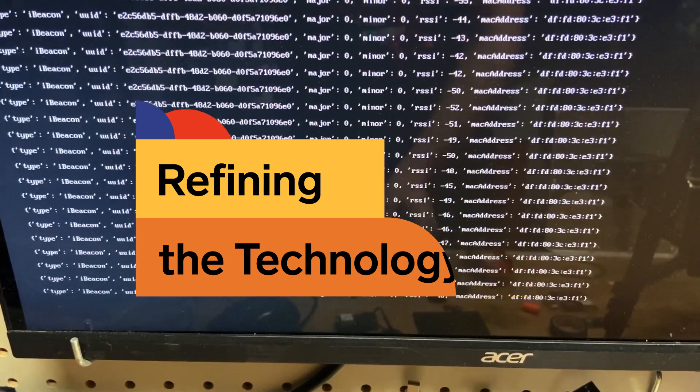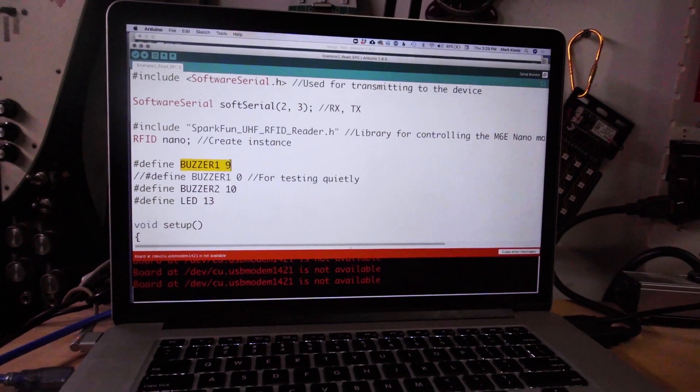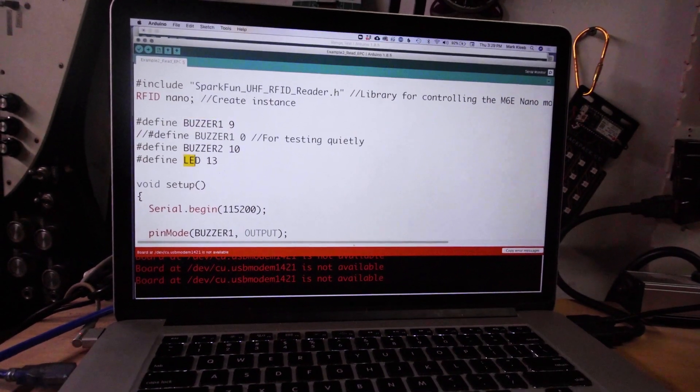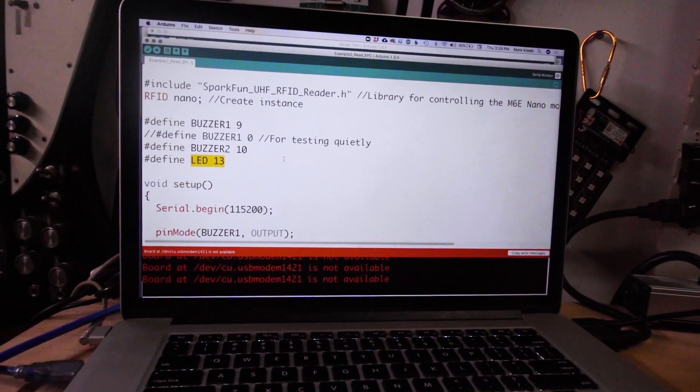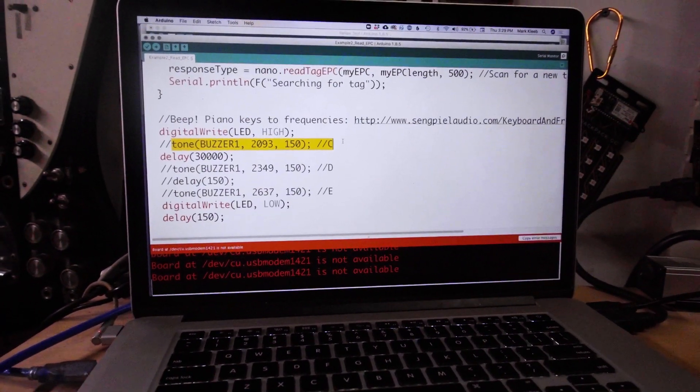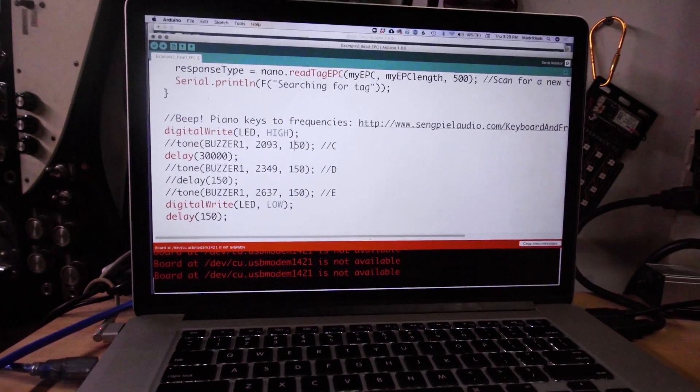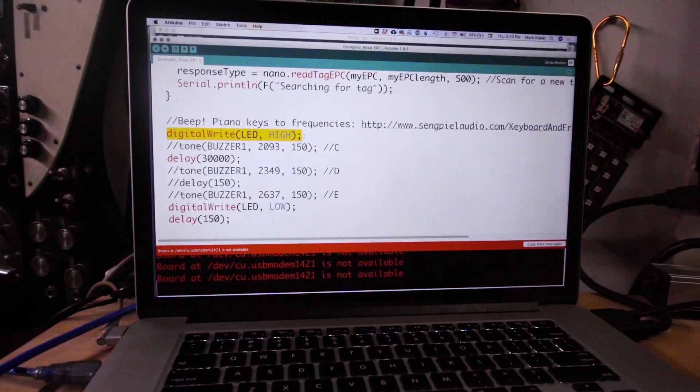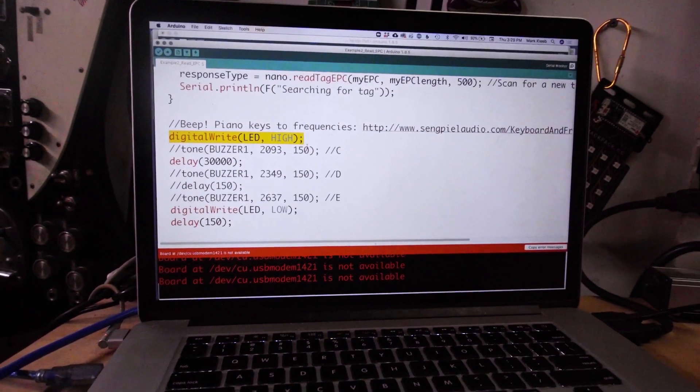So I found some code that plays a sound on a buzzer when an RFID tag is near. So what I did was I added an LED because I figured if I can play a sound on a buzzer, I can also turn an LED on. I commented these lines out because I don't need the buzzers anymore, but I added this line of code that just turns an LED on when it searches and finds a new tab.